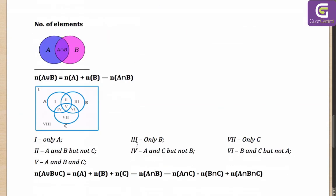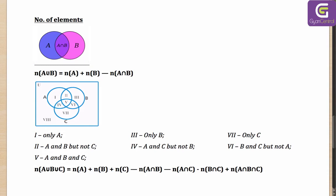Now let's look at the number of elements concept. For two sets A and B, the number of elements in A union B equals the number of elements in A plus the number in B minus the number in A intersection B. The intersection part must be subtracted because when counting A and then B, the elements in A intersection B get counted twice — but we only need to count them once.